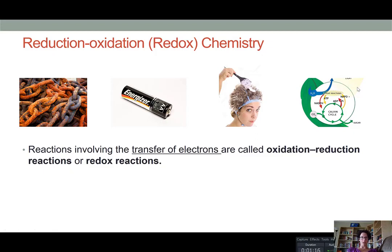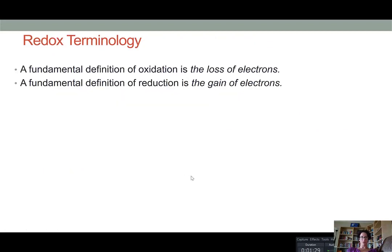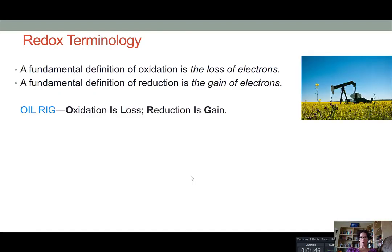So redox chemistry is the chemistry surrounding reactions in which electrons are transferred from one atom to another. Fundamental to redox terminology are two definitions. Oxidation is defined as the loss of electrons, while reduction is defined as the gain of electrons.